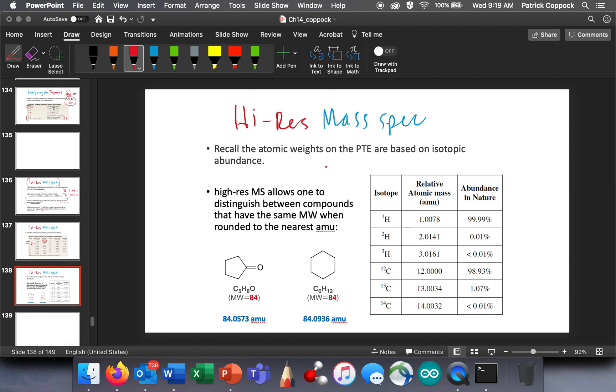So let's look at one specific application of this, and then we can move on. So let's recall that the atomic weights on the periodic table are based on isotopic abundance. So they're the average atomic weights when we see them on the periodic table. A high-res mass spec allows us to distinguish between compounds that have the same molecular weight when they're rounded to the nearest AMU.